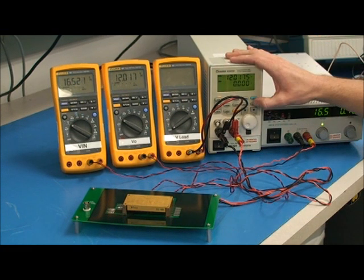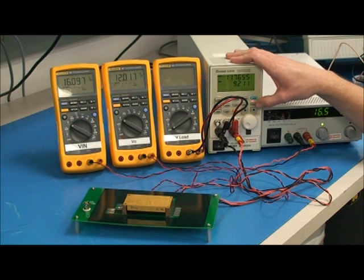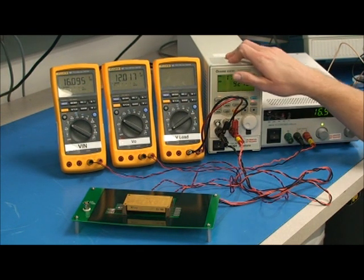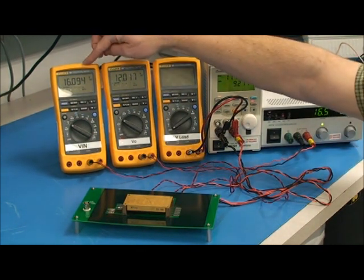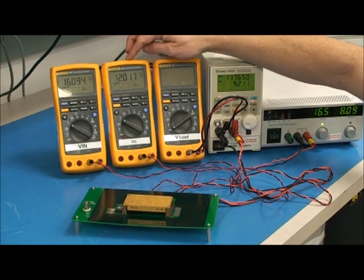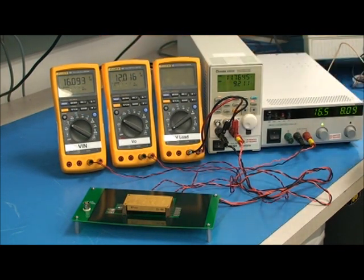And also taken at full load. Here at full load, 9.2 amps, V-in is 16 volts, and V-out is 12.017.